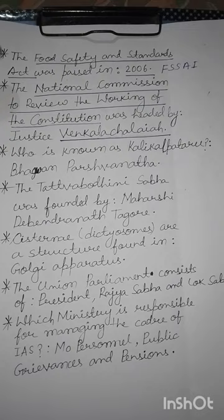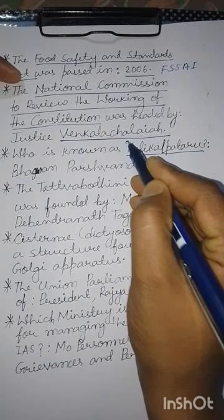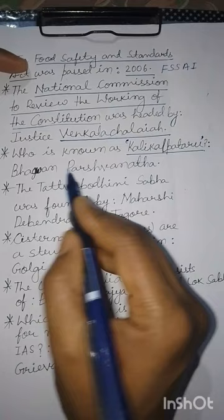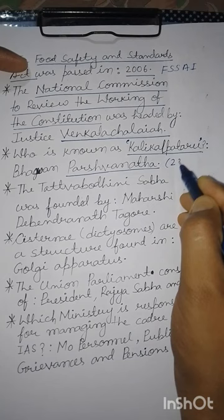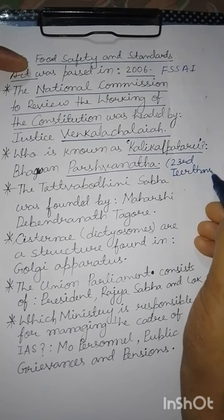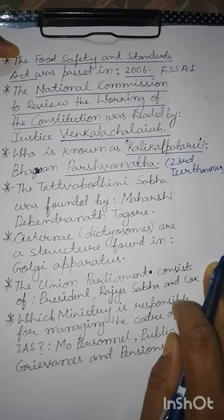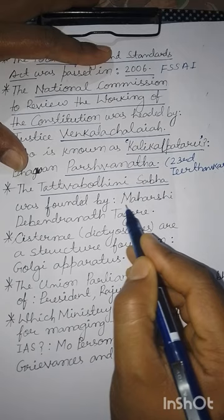Who is known as Kali Kalpataru? कलियुग में कल्पवृक्ष के समान किन्हें कहा गया है? उत्तर है — भगवान पार्श्वनाथ को, जो कि 23वें जैन तीर्थंकर थे। उन्हें ही कलि कल्पतरू कहा गया है।